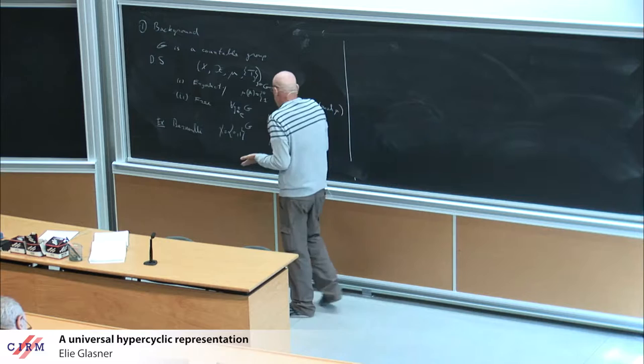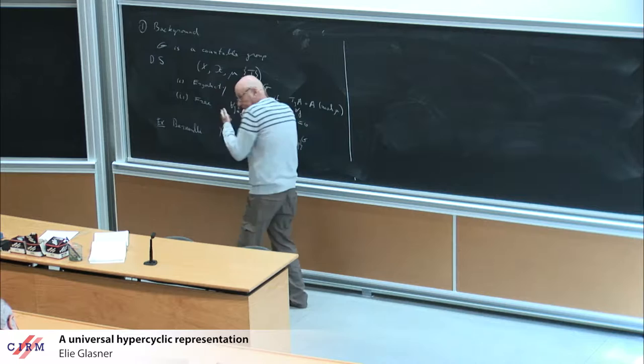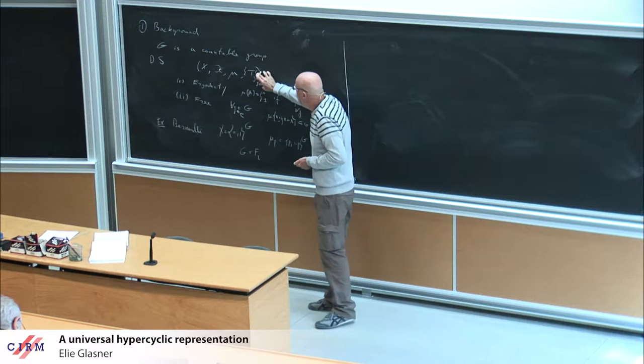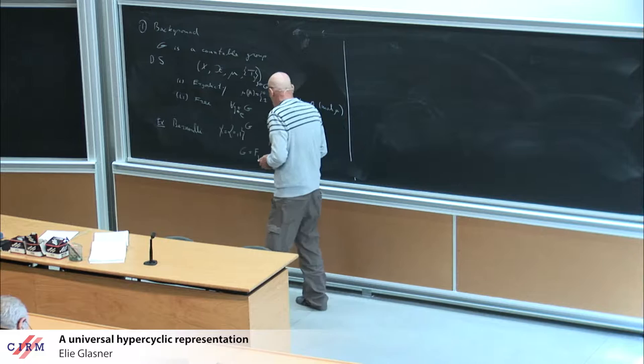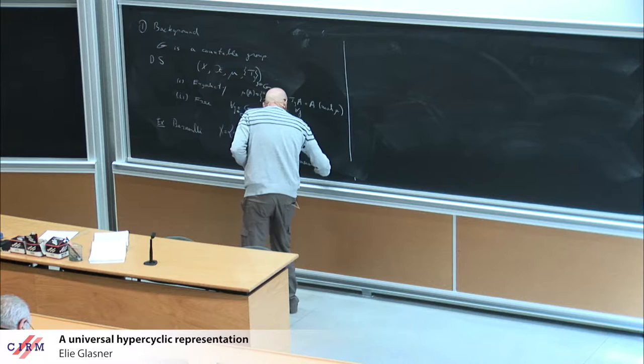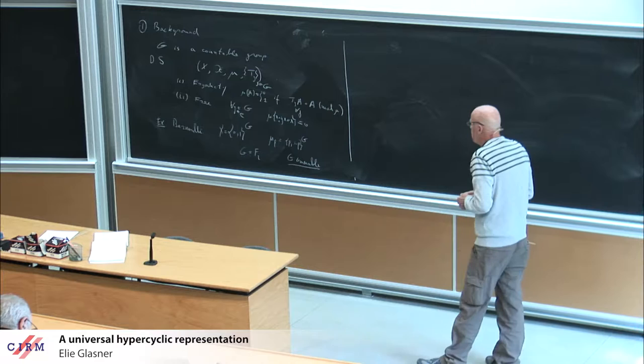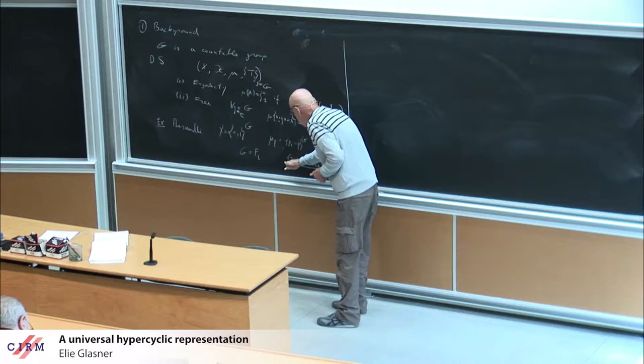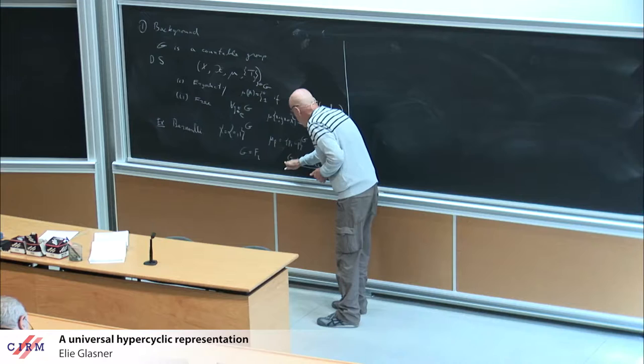Just to be concrete, there are always these examples called Bernoulli systems. In this case X is 0,1 to the power G, a compact metric space, a Cantor set, with action by translation. The measure is P mu P, which is just P, 1 minus P to the power G.